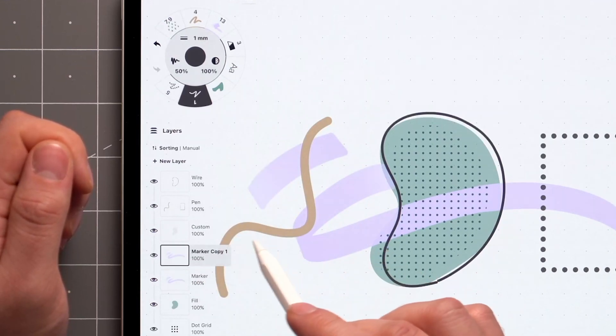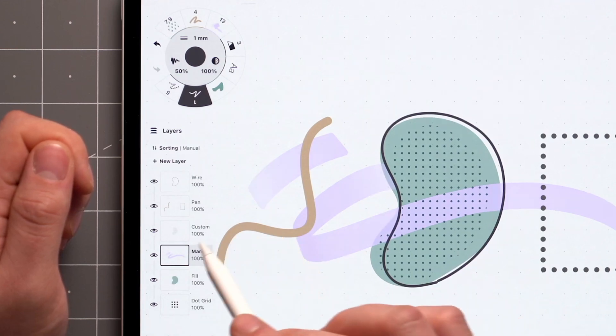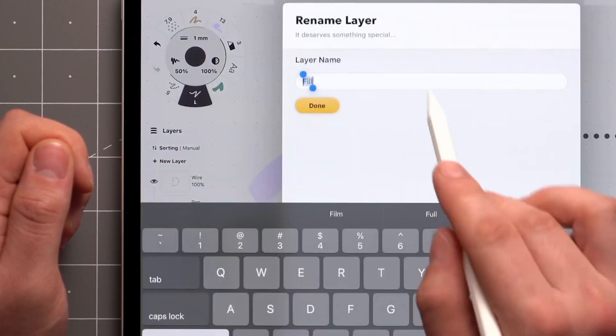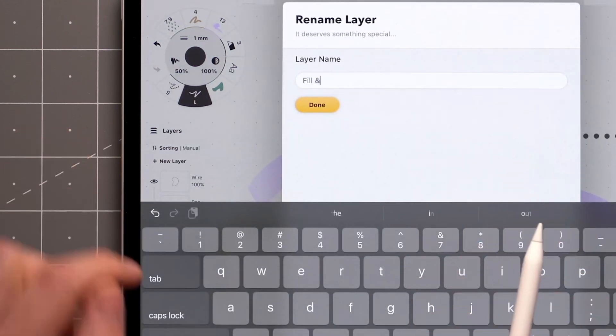The third one makes a duplicate that stacks on top of the original. Next we have Delete, then Merge, which combines the layer with one below it. Lastly, there's the option to rename a layer.